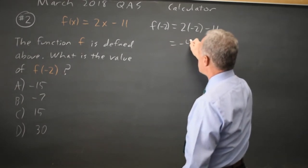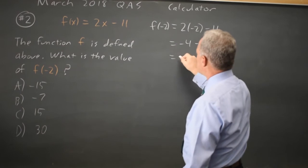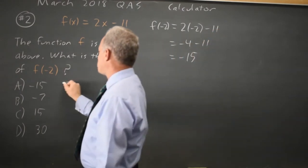Twice negative 2 is negative 4, and negative 4 minus 11 is negative 15, which would be choice A.